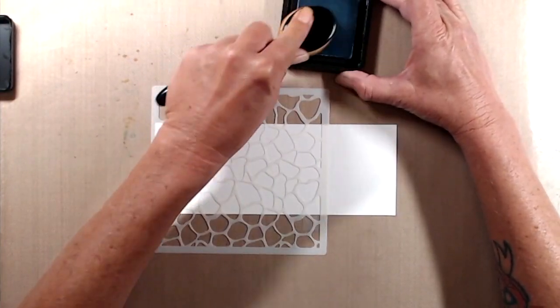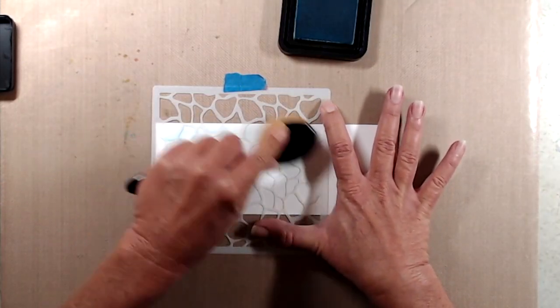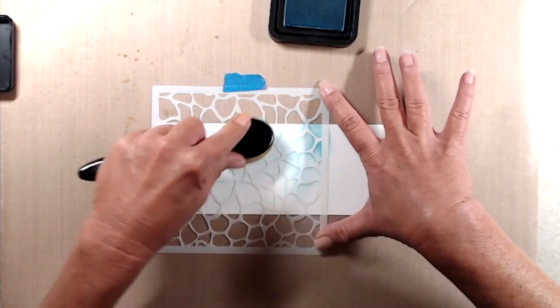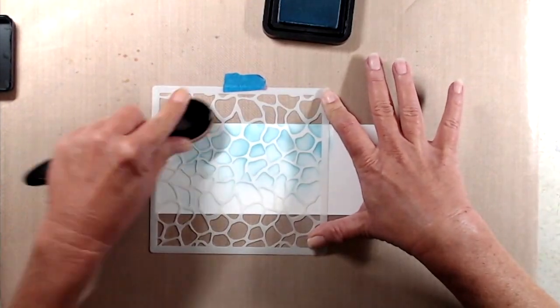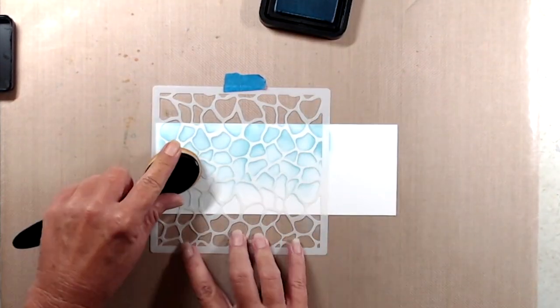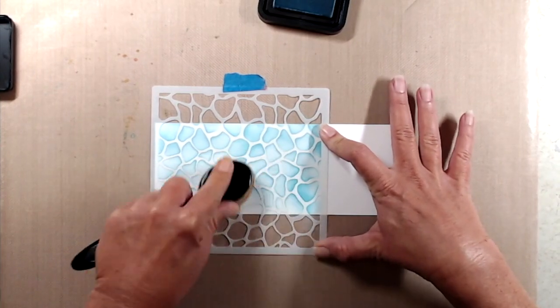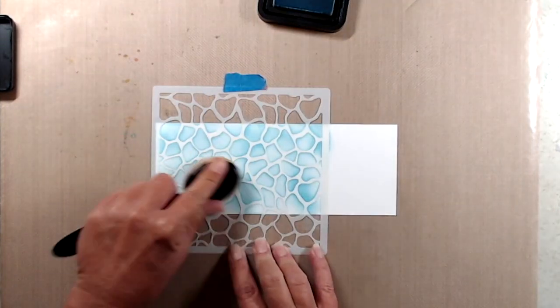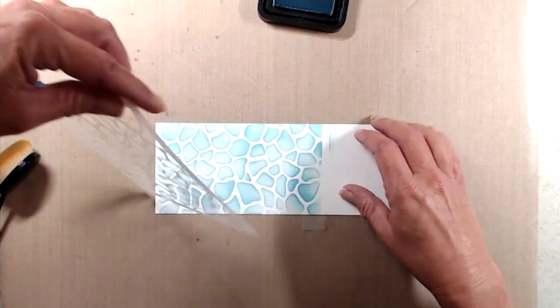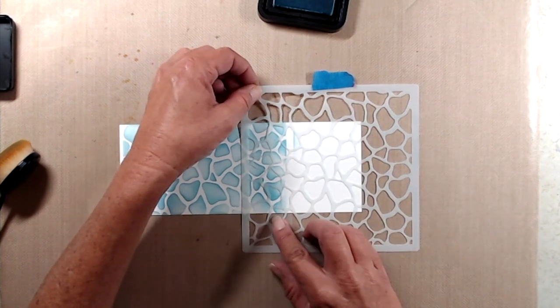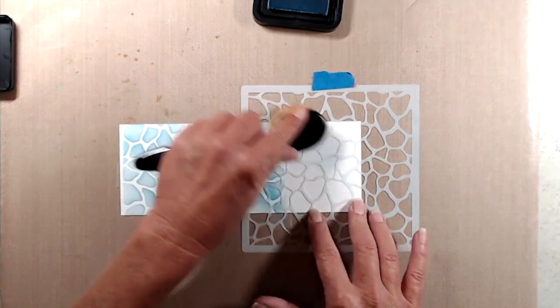I cut a piece of Neenah Classic Crest cardstock down to three and a quarter by eight and a quarter, and I used some scotch removable tape to tape the stencil down to my cardstock, and I have a piece of blue painter's tape at the top of the stencil to hold the stencil in place. I used an ink blending brush with Tumbled Glass distress ink and just started stenciling. I wasn't trying to get a perfect blend. I wasn't too worried about whether or not I went off the edge because I am going to end up moving that stencil down a little bit. I just wanted to get a coat of ink down on that first layer.